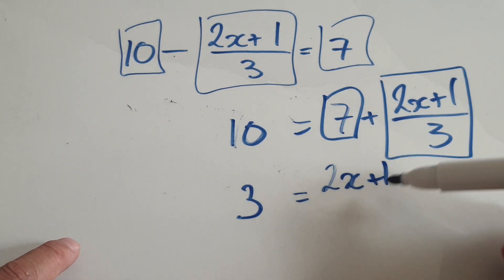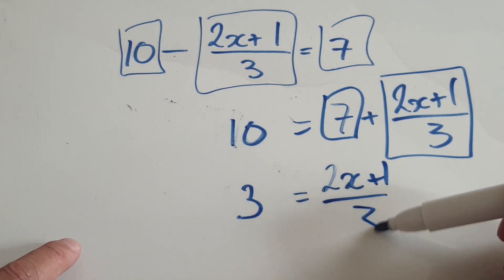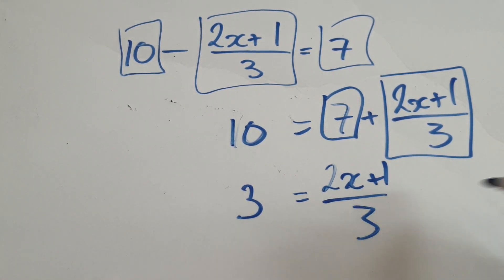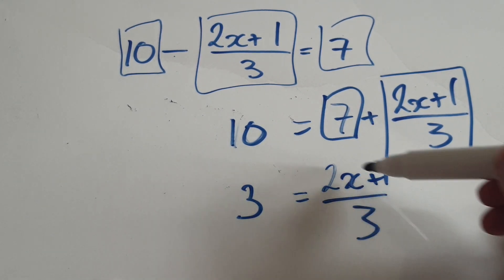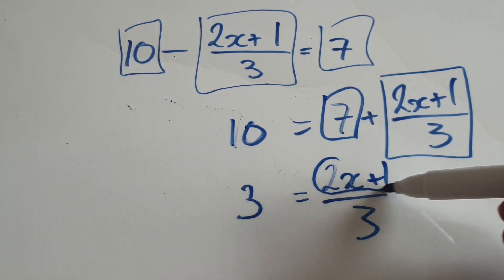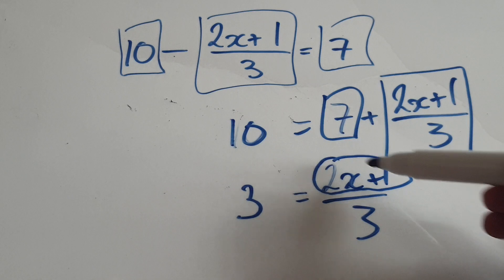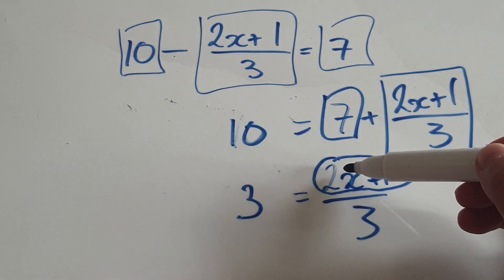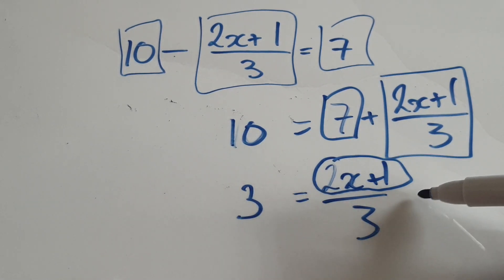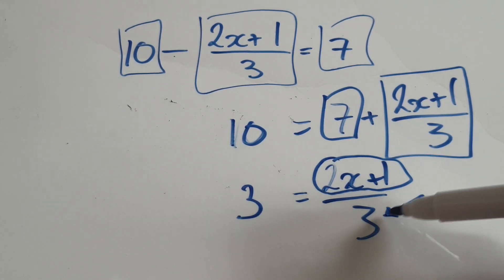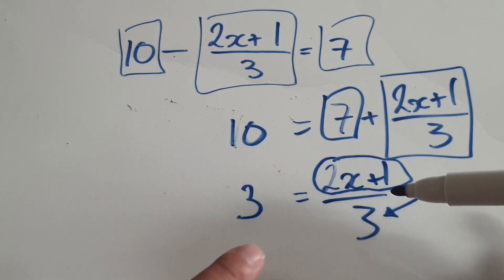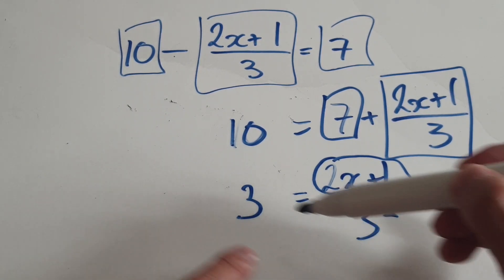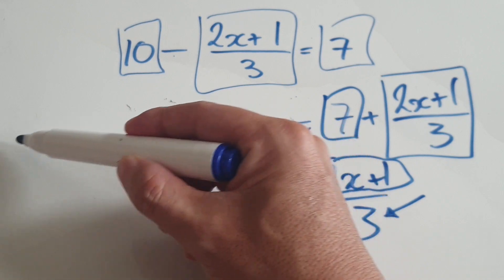All that's left is this block: 2x plus one over three. Now you want to kill off this three. Because of this divide line, you've got to visualize it as a bubble — x is trapped in this bubble. The next thing you should do is kill off this three, so in your mind, times both sides by three.